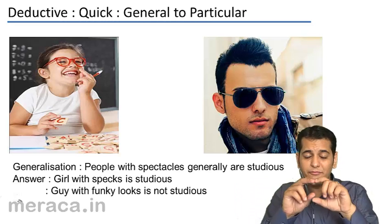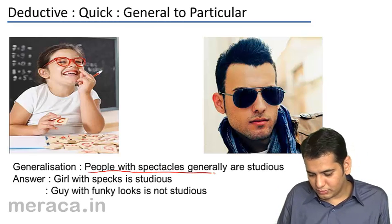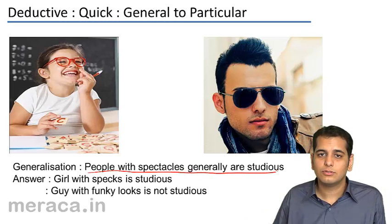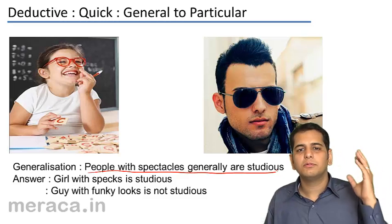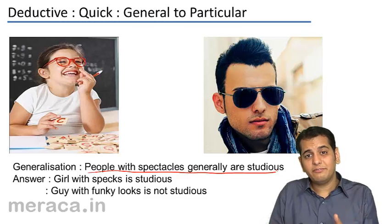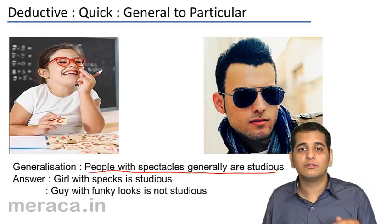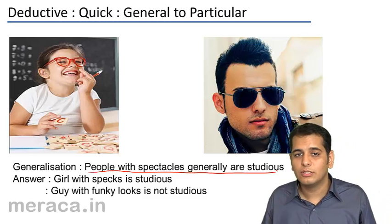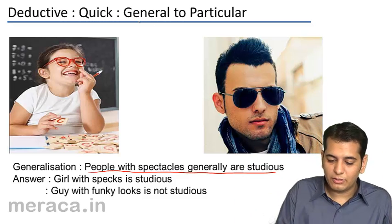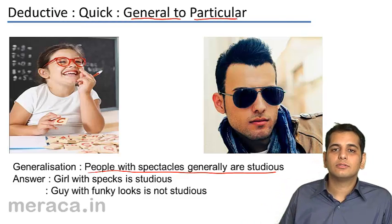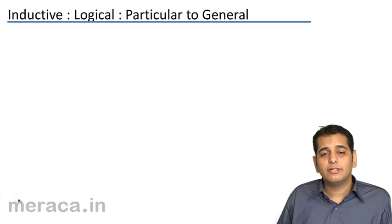This is the deductive method — we go from general to particular. Our generalization was: all people with spectacles are generally studious. Then we apply it to particular cases. When we saw people with spectacles, we said they are studious; when we saw people with funky hairstyle, we said they are not studious. We take generalizations and apply them to individual examples — going from general to particular.